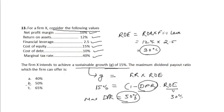In this case, the maximum dividend payout ratio which the firm can offer is equal to 50%, so option B is the correct option.